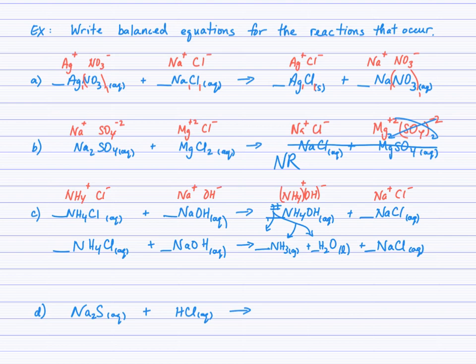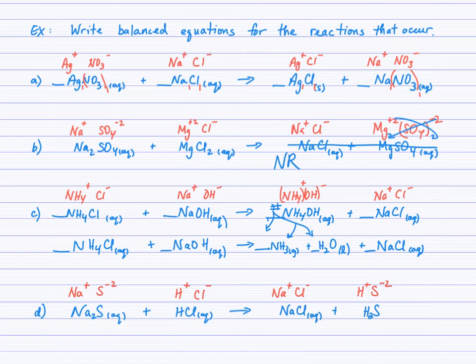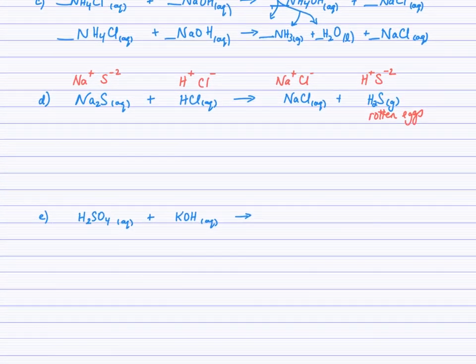For example D: undo the compounds, switch partners, write your products, check the solubility guidelines, and see if a reaction occurs. You should get NaCl and H2S. Sodium chloride is aqueous. H2S is actually a gas — hydrogen sulfide smells like rotten eggs and is easily detectable when being produced.